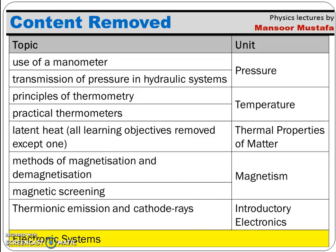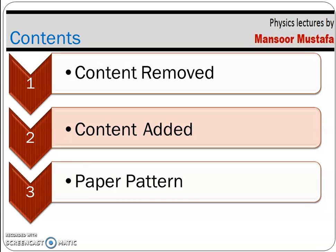The final removed topic is the electronic systems chapter. This was previously an optional chapter — questions from it appeared alongside compulsory chapters. From 2023, this optional chapter is completely removed. It was related to computer systems, logic gates, and similar topics, which had been an advantage for students from an engineering background.